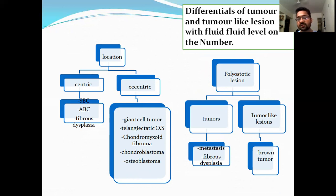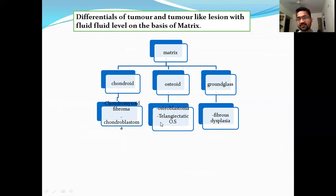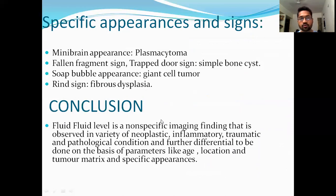Further differential can be based on the number of tumors — it could be multiple. Multiple neoplasms include metastasis and fibrous dysplasia, while multiple tumor-like lesions include brown tumor. Further differential can be based on presence of matrix: chondroid matrix shows ring and arc-like calcification — examples are chondromyxoid fibroma and chondroblastoma. Osteoid matrix involves cortex and medulla — examples are osteoblastoma and telangiectatic osteosarcoma. Ground-glass matrix is specifically associated with fibrous dysplasia.